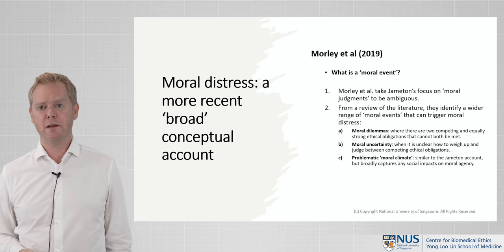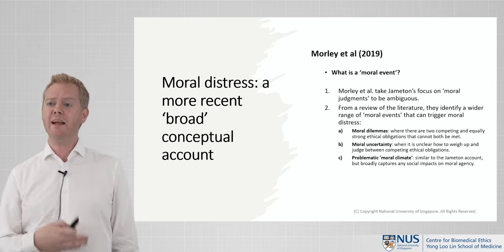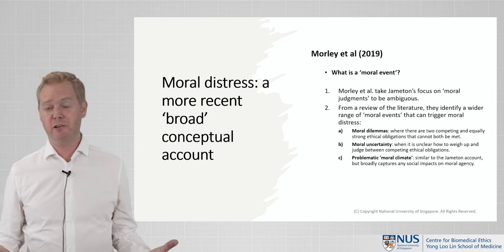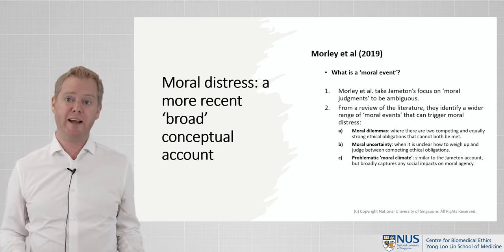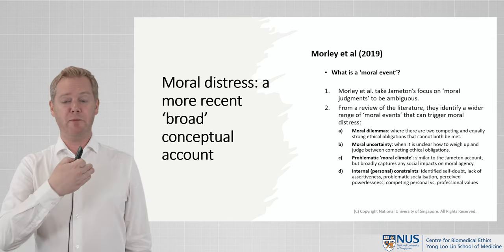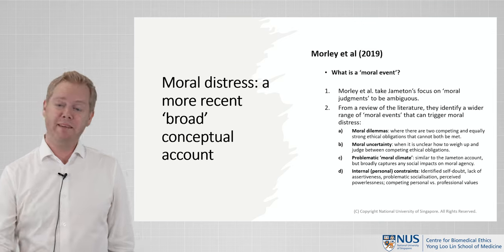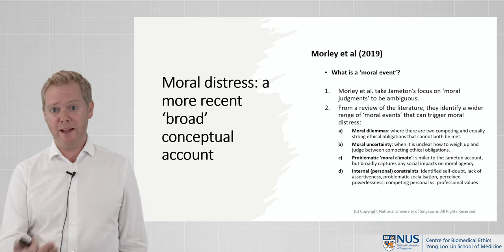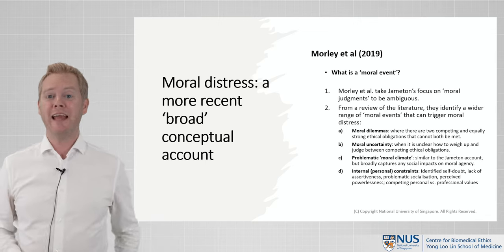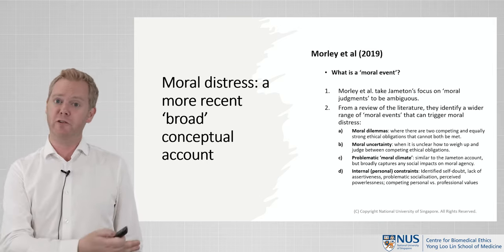Thirdly, a problematic moral climate — quite similar to what Jamerton described as institutional constraints, but taking a broader account of the social context and the ways in which our social environment can impact on our moral agency, setting in place the wrong kind of climate for moral action. Fourthly, internal personal constraints beyond the merely social or institutional: as a professional one could be doubtful within oneself, lacking assertiveness, having problematic individual socialisation, or feeling powerless in one's actions — all of which are moral events that could produce distress. So the source of moral distress can sometimes be very personal rather than institutional or social in character.